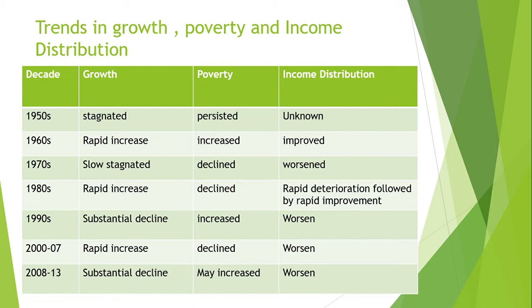Industrialization was focused on agriculture in the 1960s. That is why we call this the Decade of Development. Whatever the high growth rates were, they led to increased poverty during this time. In the 1960s, where economic growth was increased, poverty was also increased. The class with land ownership that migrated from rural to urban areas saw poverty reduction.